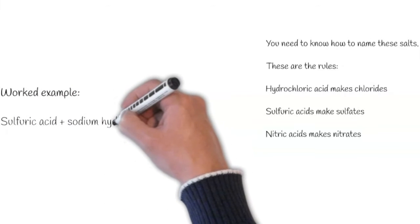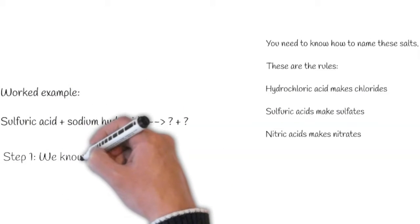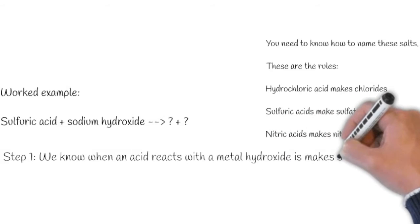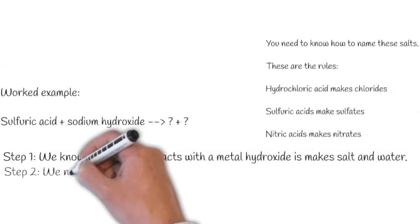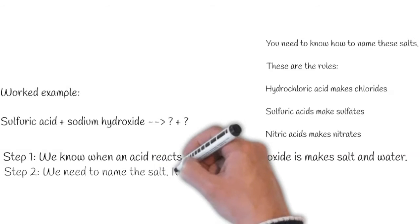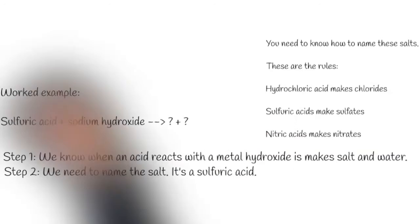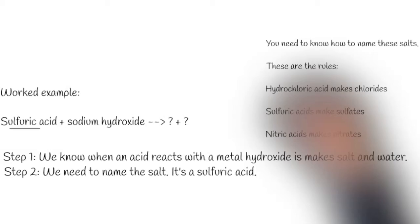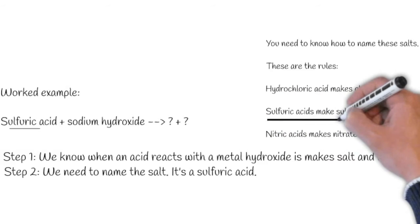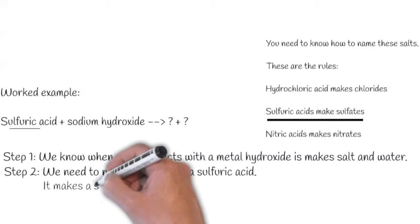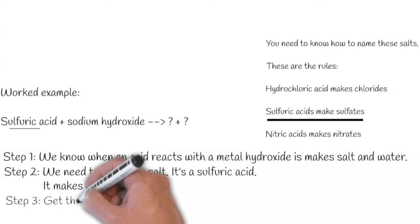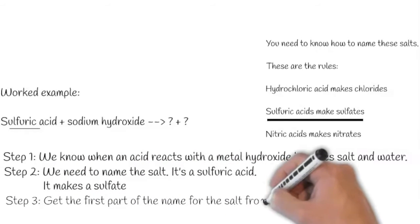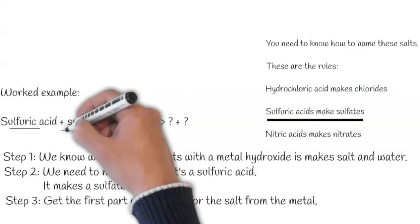Let's do another one. Sulfuric acid plus sodium hydroxide makes what? We know that an acid reacts with a metal hydroxide to make salt and water. We need to name the salt. It's a sulfuric acid, and they make sulfate. We need to get the name of the sulfate from the metal that's been reacted — from the metal hydroxide, which is sodium hydroxide, giving us sodium sulfate.